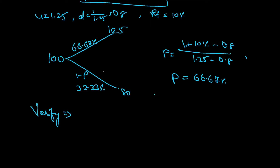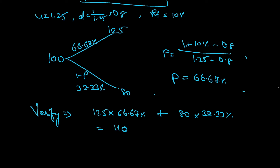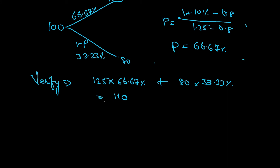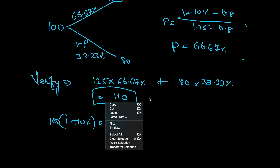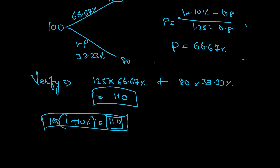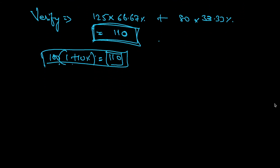Let's cross-check this: 125 times 66.67% plus 80 times 33.33% — if you calculate, it comes to 110. To verify, take 100 with a risk-free rate of 10%, so the forward price should be 110. These two match, so using the binomial model we can find the forward rate this way.